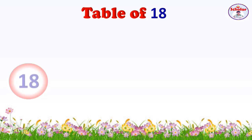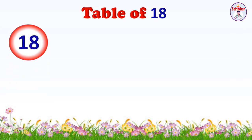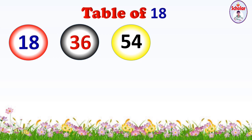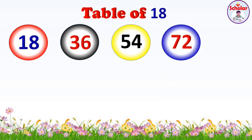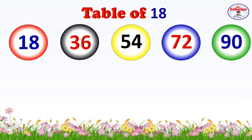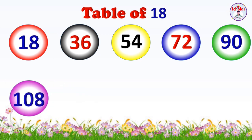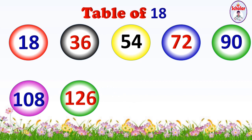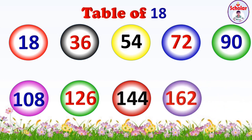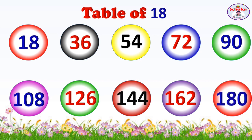Table of 18: 18×1=18, 18×2=36, 18×3=54, 18×4=72, 18×5=90, 18×6=108, 18×7=126, 18×8=144, 18×9=162, 18×10=180.